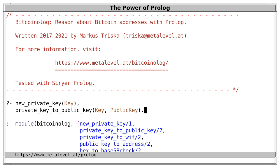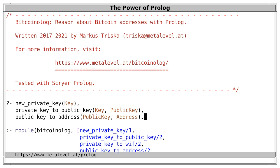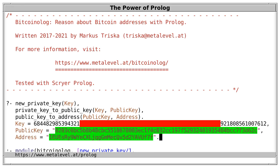Bitcoin takes this even further and uses addresses that are derived from public keys, so a Bitcoin address doesn't even reveal the public key. We can use the predicate public_key_to_address to derive, from a given public key, the Bitcoin address that corresponds to this key. So now we have, in addition to the public key, the address.